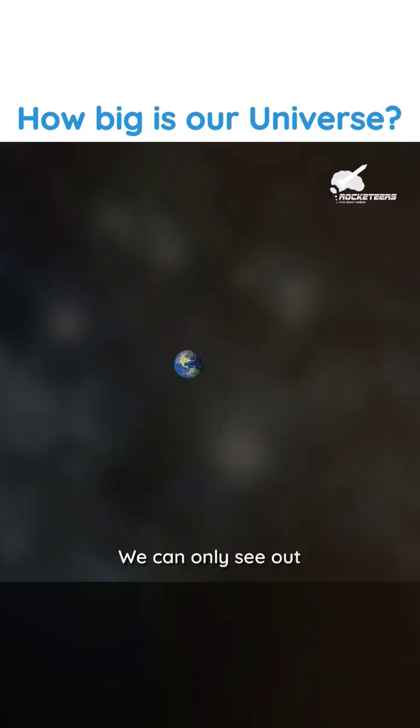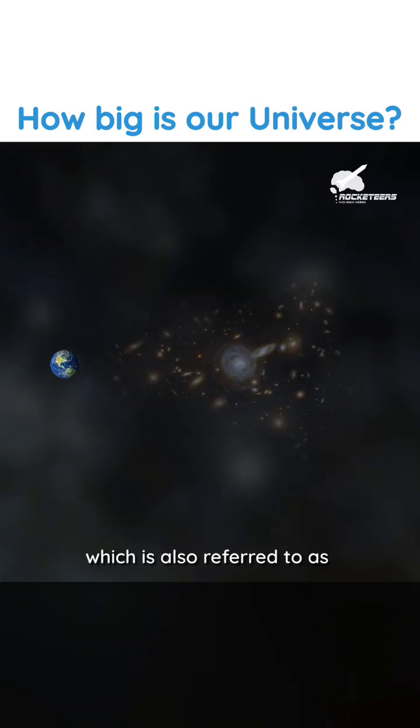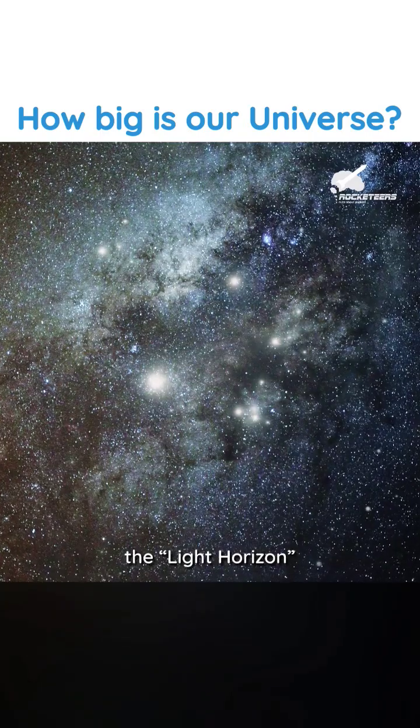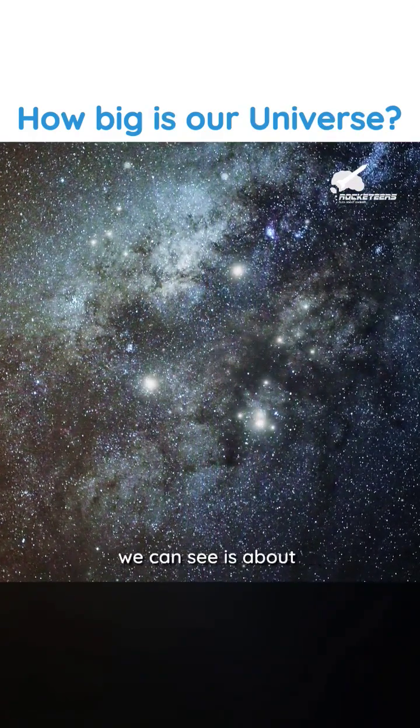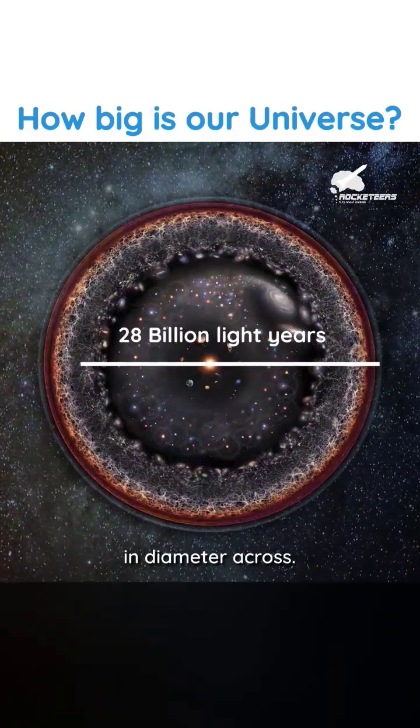We can only see out to a distance of about 14 billion light-years from Earth, which is also referred to as the light horizon. This means that the size of the universe that we can see is about 28 billion light-years in diameter across.